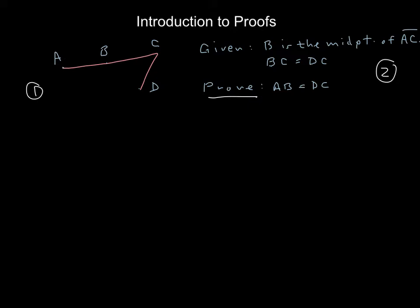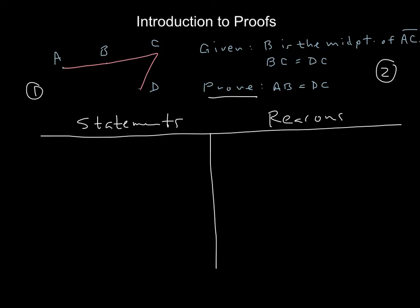And speaking of steps, we like to do our proofs in a two-column form. So we can make it like a T here, and we're going to have two columns here. The left column will be statements, and the right column will be reasons. And we number these steps accordingly. And so our first step is generally going to be given. So I'm going to rewrite what's up there where B is the midpoint of AC, and also BC equals DC. And our reason is given.